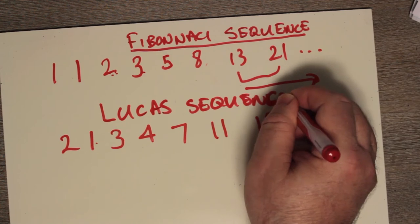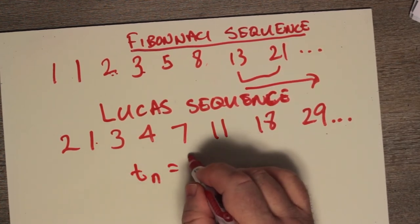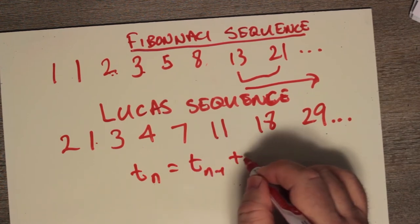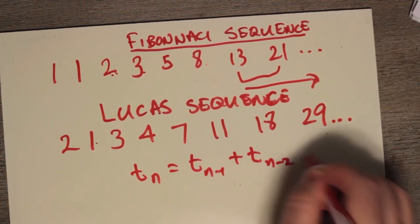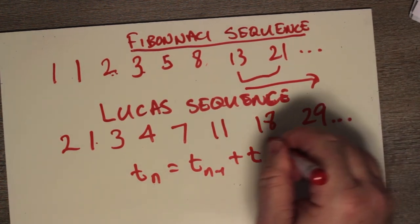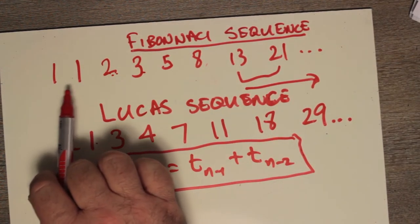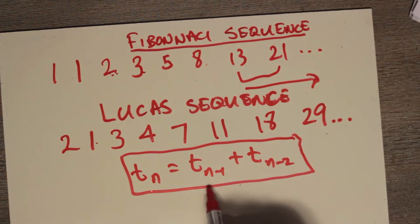Following the same rules. And that is that tn equals tn minus 1 plus tn minus 2. And that's really all it is. Right? In fact, both of these sequences follow that exact formula. But what if I wanted to only say which sequence I want. Well, you need to tell me what the first two things are.